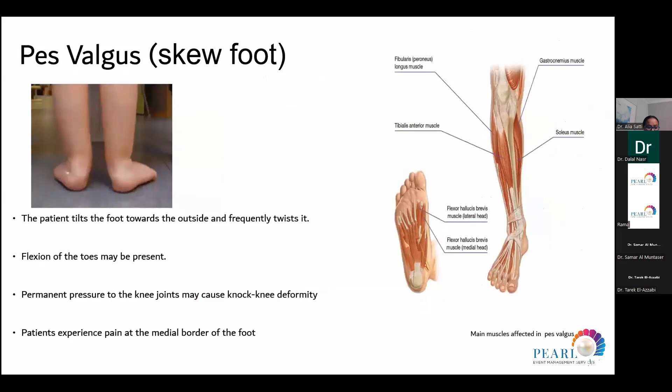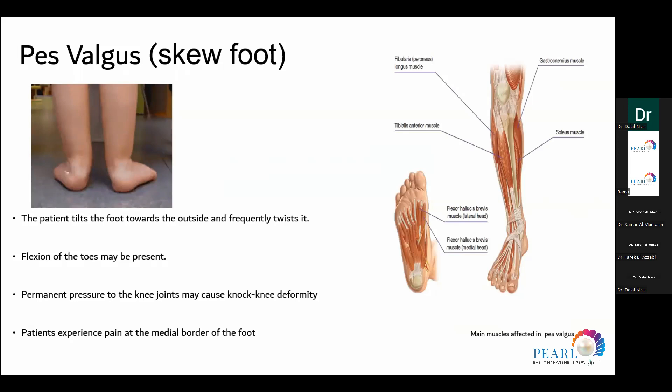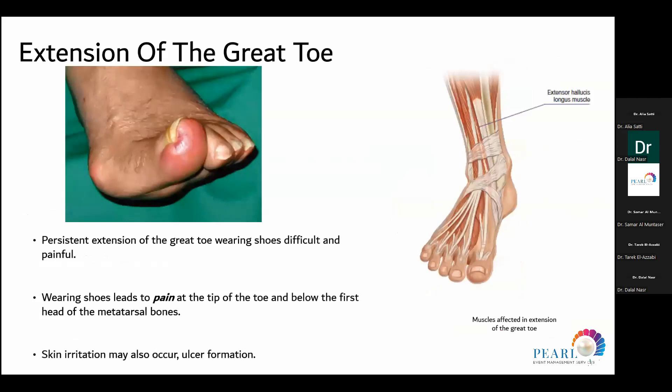In valgus deformity, the patient tilts the foot outward with flexion at the toes to help balance, causing permanent pressure at the knee joints leading to knock-knee deformity and pain at the medial border of the foot. Another example is extension of the toe, where the affected muscle is the extensor hallucis longus. There will be persistent extension of the big toe, causing pain at the tip of the toe when wearing shoes, as well as skin irritation and ulcer formation.